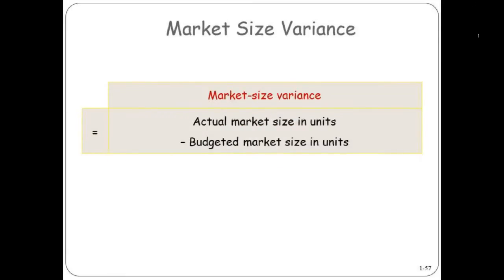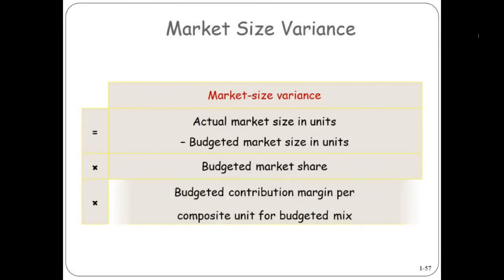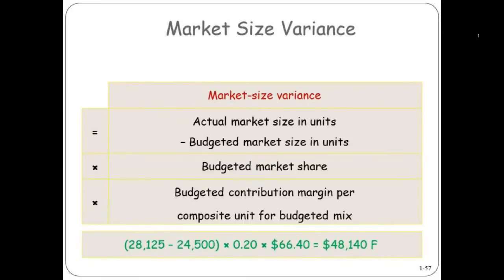The market size variance uses the actual size versus the budgeted size — we know it's a bigger market — and you multiply that by what you budgeted your market share to be, 20%, and then you use that weighted average contribution margin. That gives you 48,000 favorable. Not a surprise — the market size was growing, so you expected to make more money.